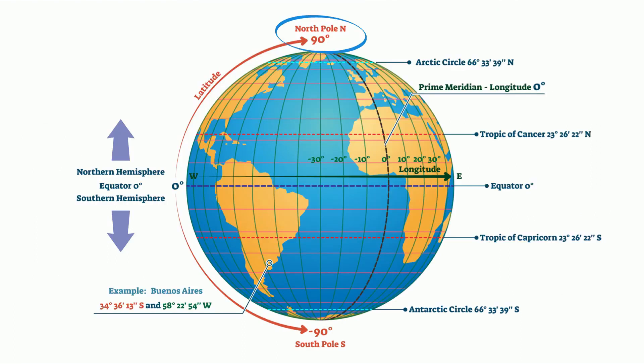The North Pole is found at 90 degrees north, the Arctic Circle is found at 66.5 degrees north, and on the other hand, the South Pole is found at 90 degrees south and the Antarctica Circle is found at 66.5 degrees south.